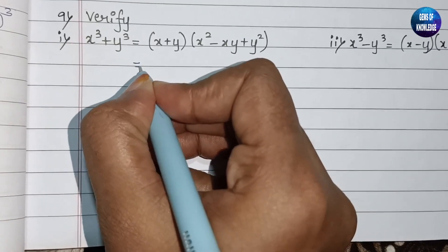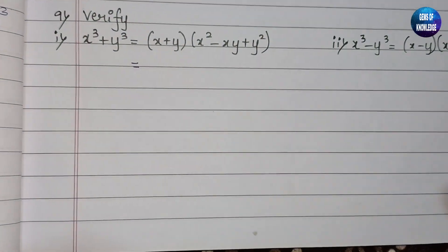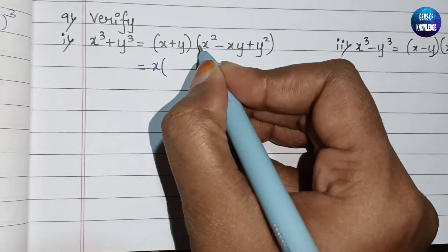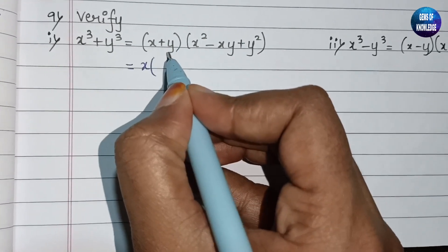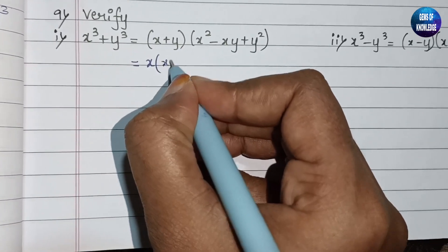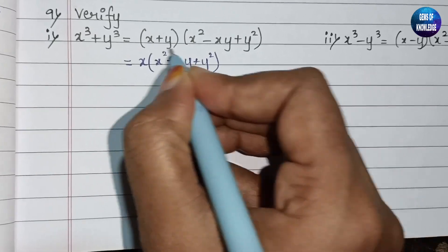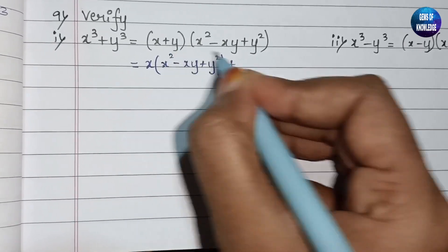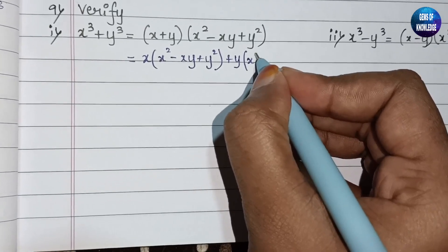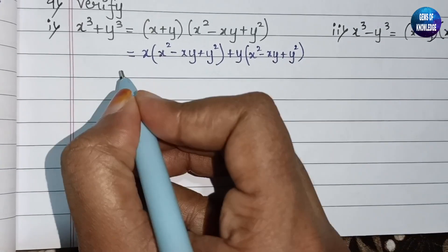So here we have (x+y) multiplied by the whole term. x is multiplied by the whole term x²-xy+y², then plus y is also multiplied by that same whole term x²-xy+y².